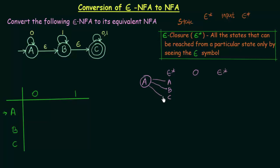Now on input 0: where does A go on 0? A goes to A itself. Where does B go on 0? B does not go anywhere on 0 — so that is phi. Where does C go on 0? C goes to itself on 0. Now we take the Epsilon Closure of these results. Epsilon Closure of A is A, B, and C.